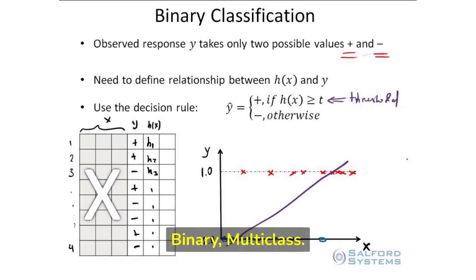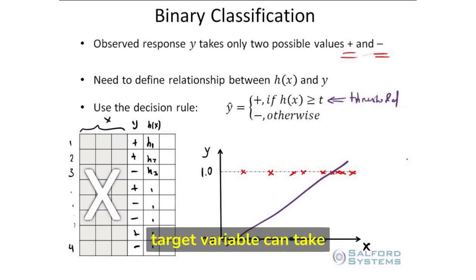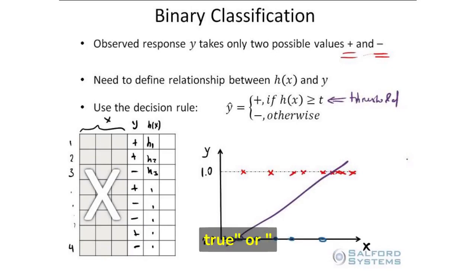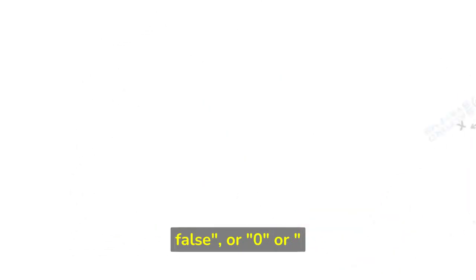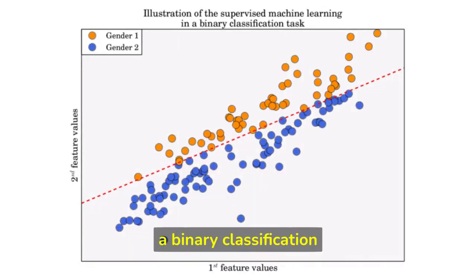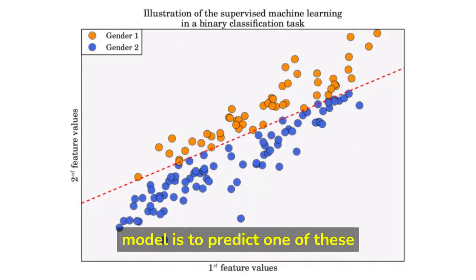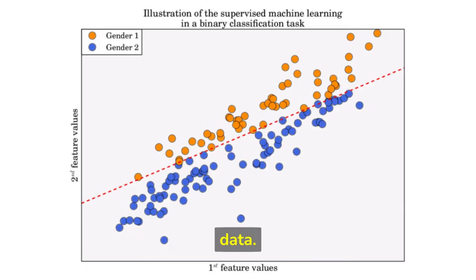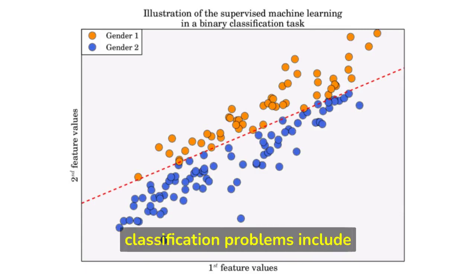Regarding output type — binary vs. multi-class: in binary classification, the target variable can take only two possible values, such as yes or no, true or false, or 0 or 1. The goal is to predict one of these two values based on the input data. Examples of binary classification problems include spam detection, cancer diagnosis, and sentiment analysis.